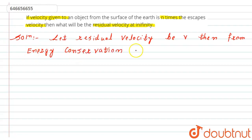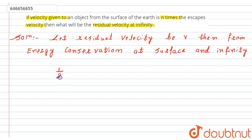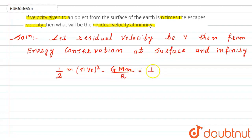From energy conservation at the surface and at infinity, we can write: one-half m times (n × vₑ)² minus the gravitational potential energy GMm/r equals the kinetic energy at infinity, which is one-half mv².